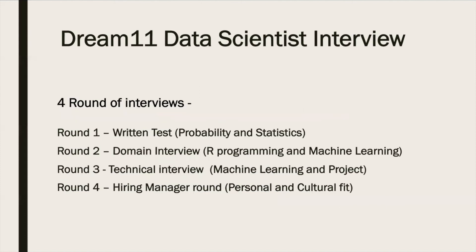In total, there were four rounds in the interview process. The first round was a written test in which questions were based on probability and statistics. The second round was a domain interview round with questions on machine learning and R programming. After this, there was another technical interview round where most questions were based on machine learning and the projects mentioned in your resume. The last round was a hiring manager round covering personal and cultural questions. Now we will look into the details of each round.